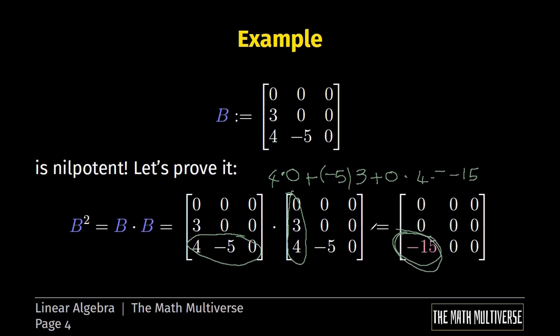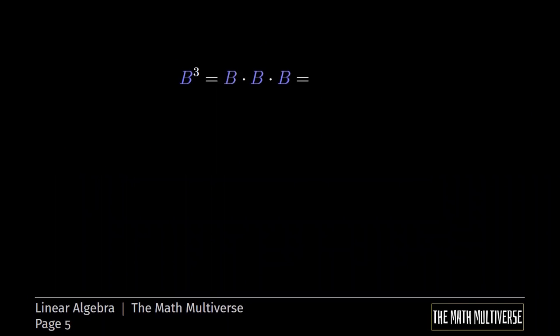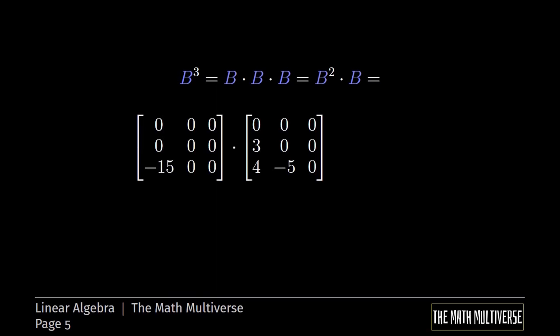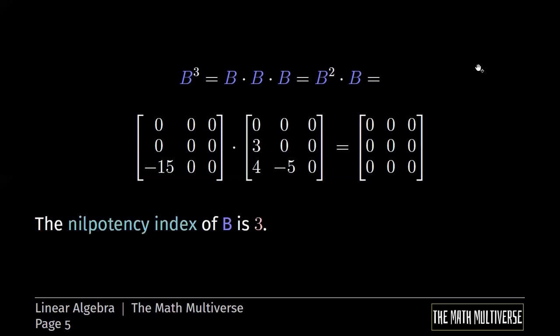So if B squared is not zero, that means that we still don't know if B is a nilpotent matrix or not. So let's compute B cubed. B cubed is B times B times B, but this can also be written as B squared times B. B squared we already have. So let's compute this. And at the end, you can easily see that the result of this multiplication is finally the zero matrix. So yes, the matrix B is nilpotent. And we know more than that. We also know that the nilpotency index of the matrix B is equal to 3.